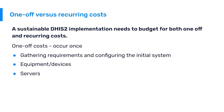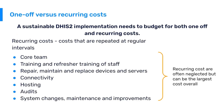An important distinction in budgeting is one-off versus recurring costs — a DHIS2 implementation needs to budget for both. Typical one-off costs are those that occur once, such as gathering requirements, configuring the initial system, buying equipment or servers. However, associated with these one-off costs there are also recurring costs.